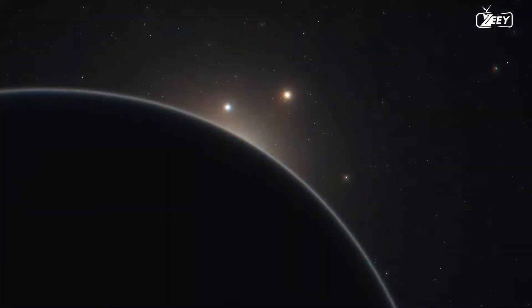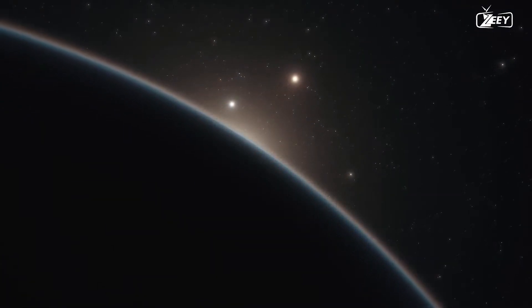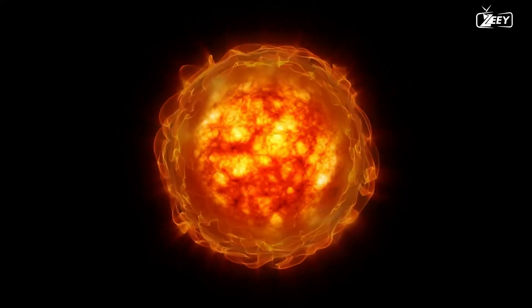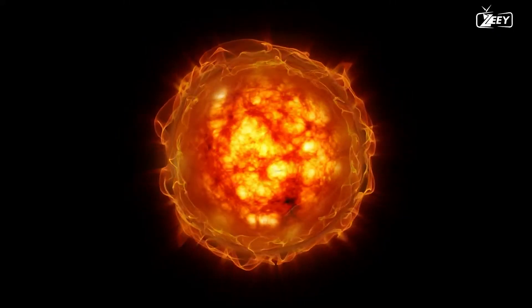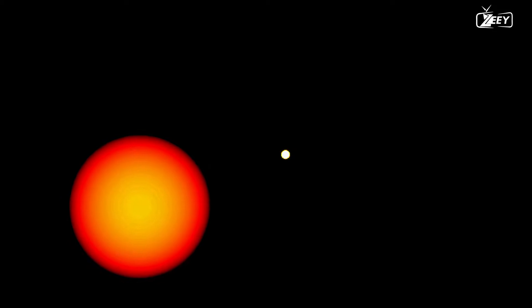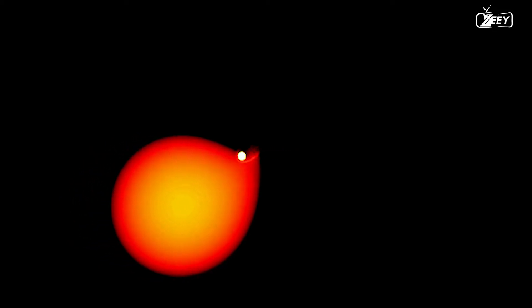RS Ophiuchi is part of a two-star system. One is a white dwarf, an extremely developed and compact star. The other is a red giant. The white dwarf regularly travels to and takes material from the red giant because of how close these two stars are.